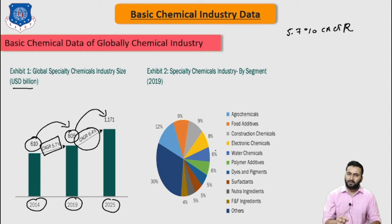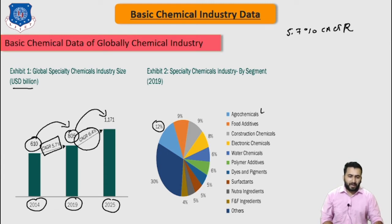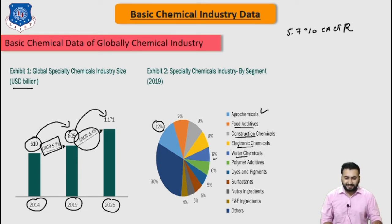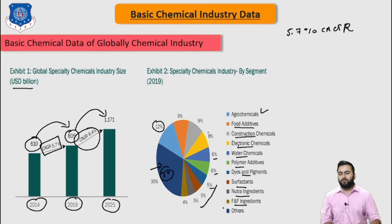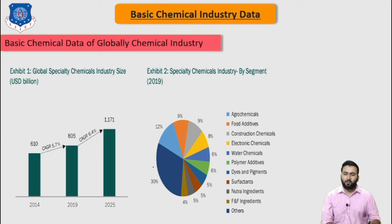The specialty chemical industry is estimated to grow faster in emerging markets such as India and China. In the global specialty chemical breakdown: agrochemicals account for 12%, food additives and construction chemicals 9%, electronic chemicals and water chemicals 8%, polymer additives 6%, dyes and pigments 5%, flavor and fragrance ingredients 5%, surfactants 5%, and other chemicals 30%.